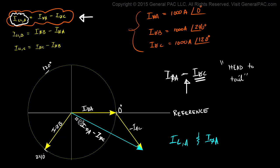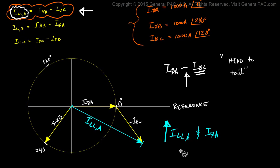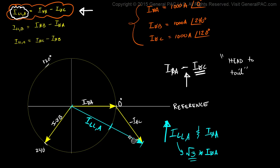Remember, this is phase current A and this is line current A. We see that the line current is a lot larger than our phase current. The magnitude of our line current, which starts from the origin and ends at this tip here, is a lot larger than our phase current. In fact, if we compare the two, we will find that the line current is actually the square root of 3 times larger than our phase current. If we take our phase current and line it up with our line current, we would have to multiply it by the square root of 3, or 1.73, to make it equal our line current.